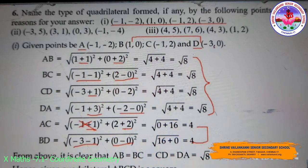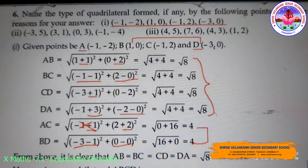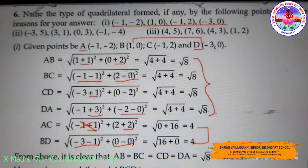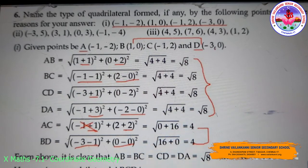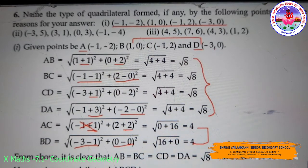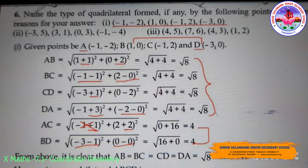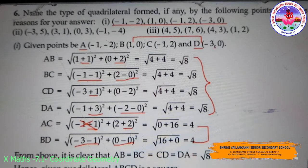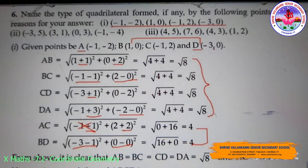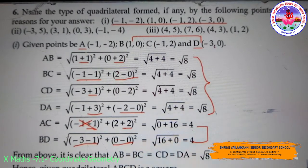For CD with C(-1, 2) and D(-3, 0): √[(x2 - x1)² + (y2 - y1)²]. Substituting: √[(-3 + 1)² + (0 - 2)²] = √[(-2)² + (-2)²] = √(4 + 4) = √8. Similarly substituting for DA, I also get √8.